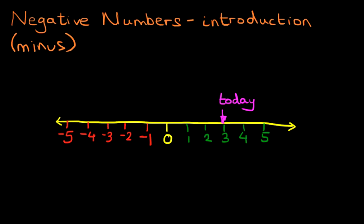So you can say minus one or negative one. You can say minus two or negative two. So the weatherman has said that tomorrow it's going to be minus two. Here is minus two. So that is tomorrow.